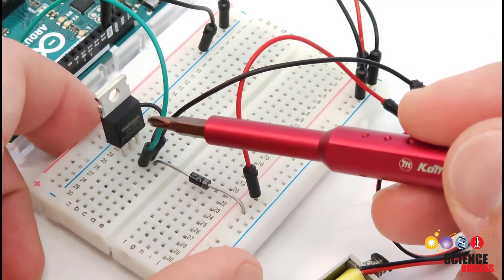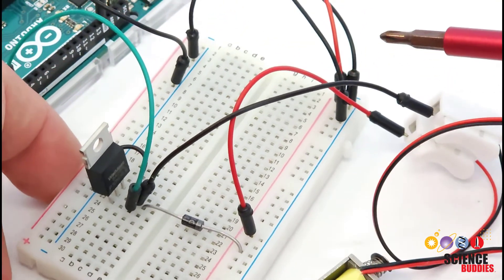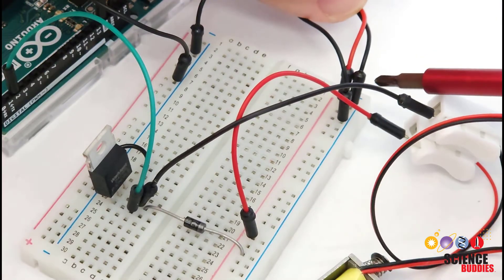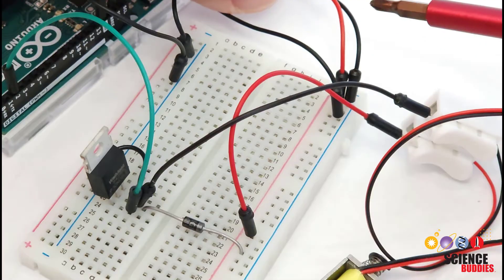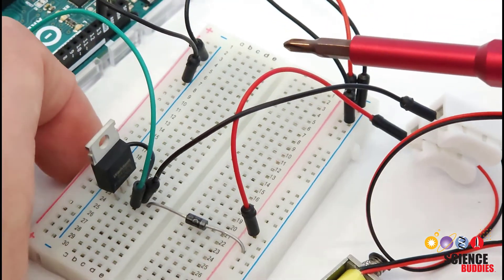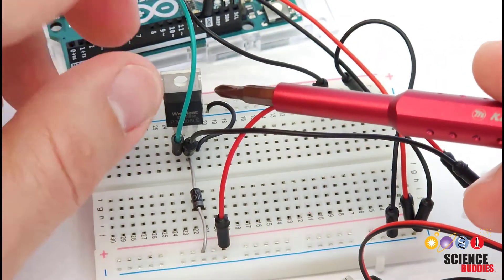So what the transistor allows you to do is control the flow of current through your load, your motor or solenoid, from an external power supply. In this case, I have two wires coming off the top of the breadboard here that go to an external 12-volt power supply because this is a 12-volt solenoid. And I'm going to talk a little bit more about how power is connected later. But first, we are going to zoom in and look at the transistors.